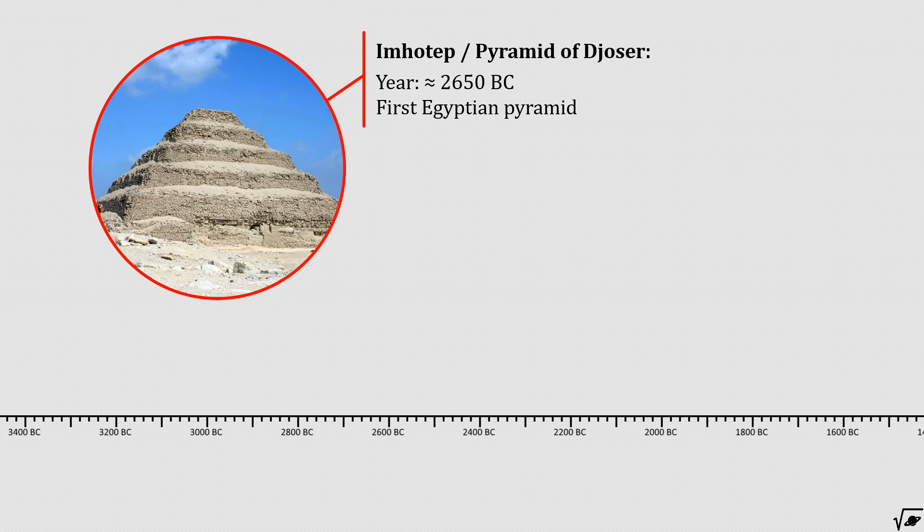A massive structure for its time, 62 meters high. The construction of this pyramid marks the start of a new era, the 3rd and 4th dynasty of Egypt. An era where dozens of these pyramids were built, with this pyramid probably the first one.